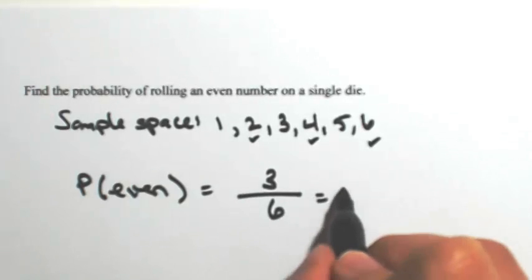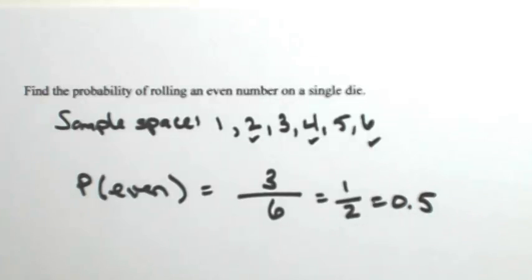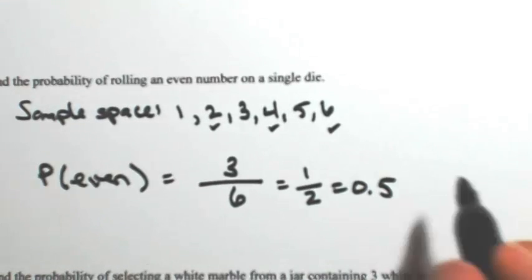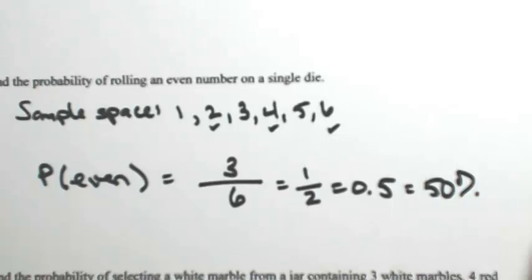Three out of six is the same as one half, so this is 0.5, or if you want it as a percentage, 50% chance.